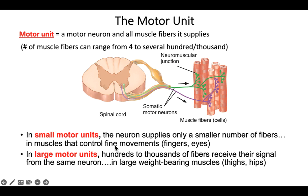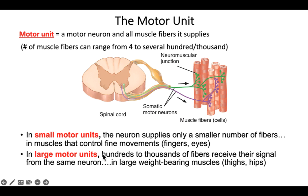Small motor units allow more precise control because you can activate a small number of fibers at a time. Muscles with very fine, precise movements — like finger muscles and eye muscles — have a high number of small motor units. Large weight-bearing muscles like the quadriceps and gluteus maximus have large motor units, giving more strength but less precision.